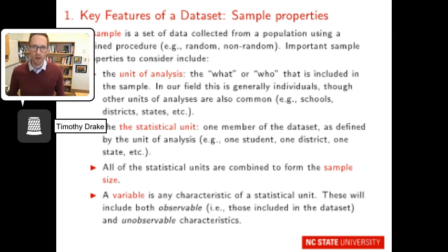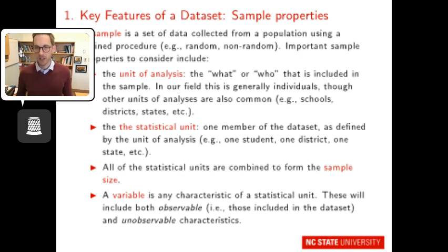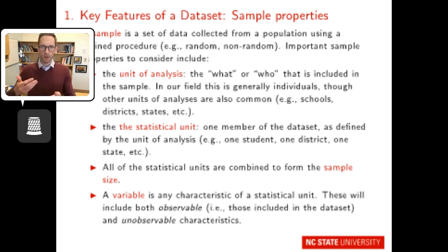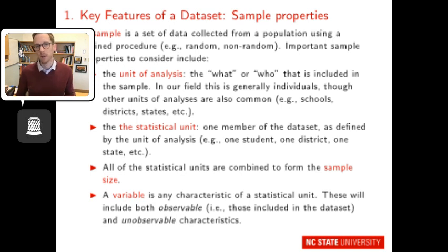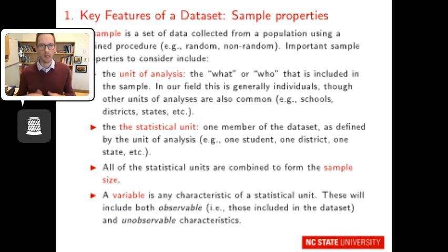A sample is a set of data collected from a population using some defined procedure — random or non-random. Random selection might involve grabbing every 10th person from a phone book. You can also stratify and systematically sample randomly. Non-random sampling could be a convenience sample, like this class, or purposeful sampling where you select specific people who play key roles — for example, state-level policymakers — if that fits your research question.